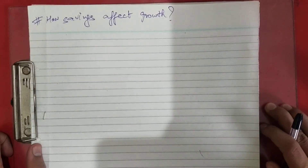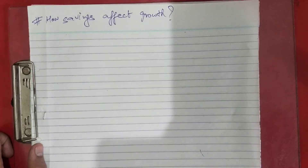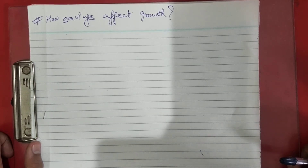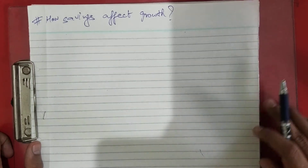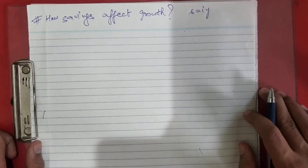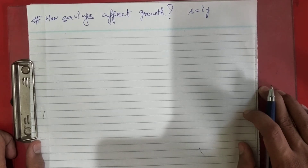As you all know, the Solow model shows that saving rate is an important factor that determines the steady state of capital stock. If the saving rate is high, the economy will have a large capital stock and high level of output per worker at steady state. You know that saving is equal to investment, so if saving increases, investment will also increase, and due to increase in investment your capital will increase.